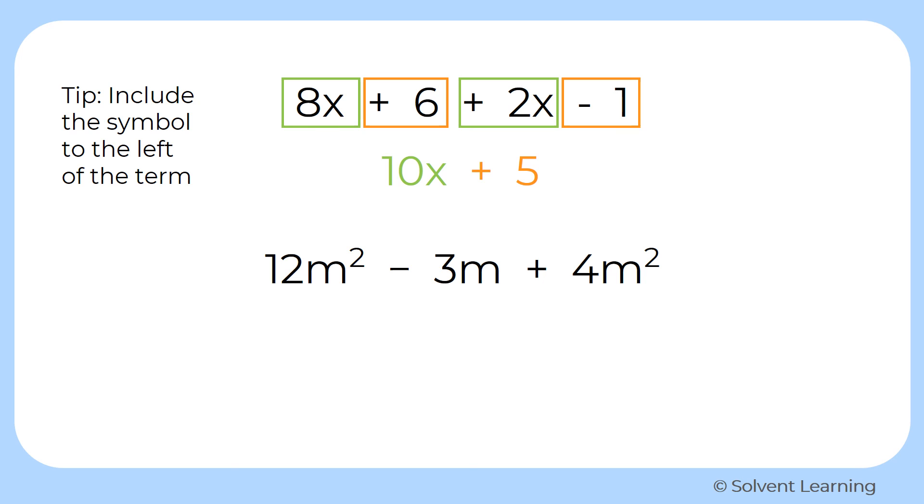So that means that the first and last terms are like terms. They both have the same variable with the same exponent. They both have an m squared. So that makes them like terms. So we can add those terms together.